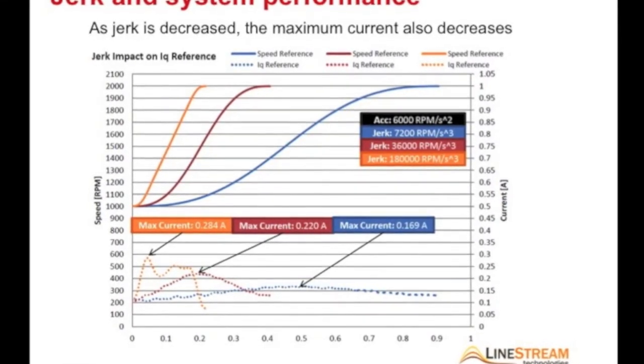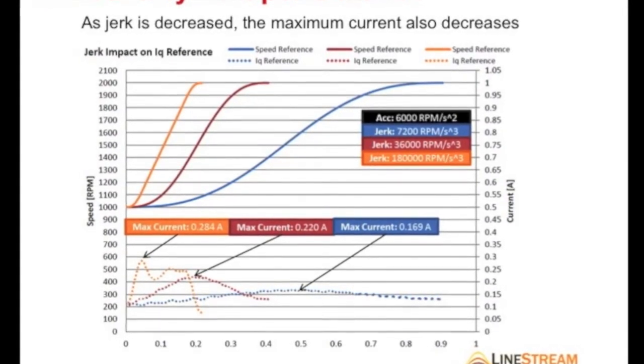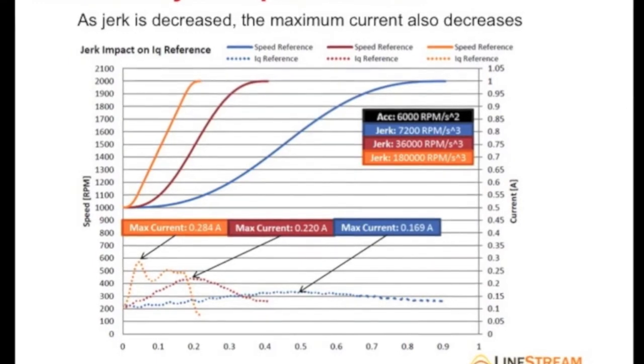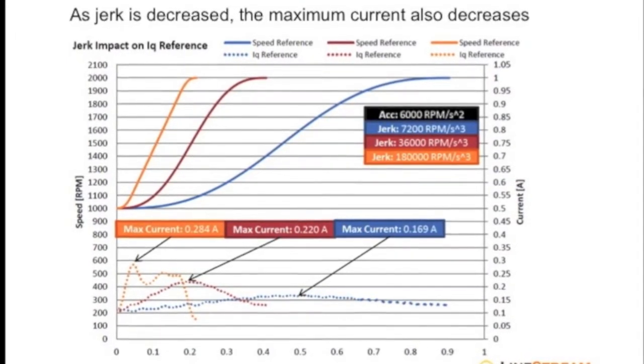Applications that don't need transition speeds as fast as possible can benefit from smaller jerk. We see from the graph that as we decrease the jerk of the system, we obtain smoother transitions.